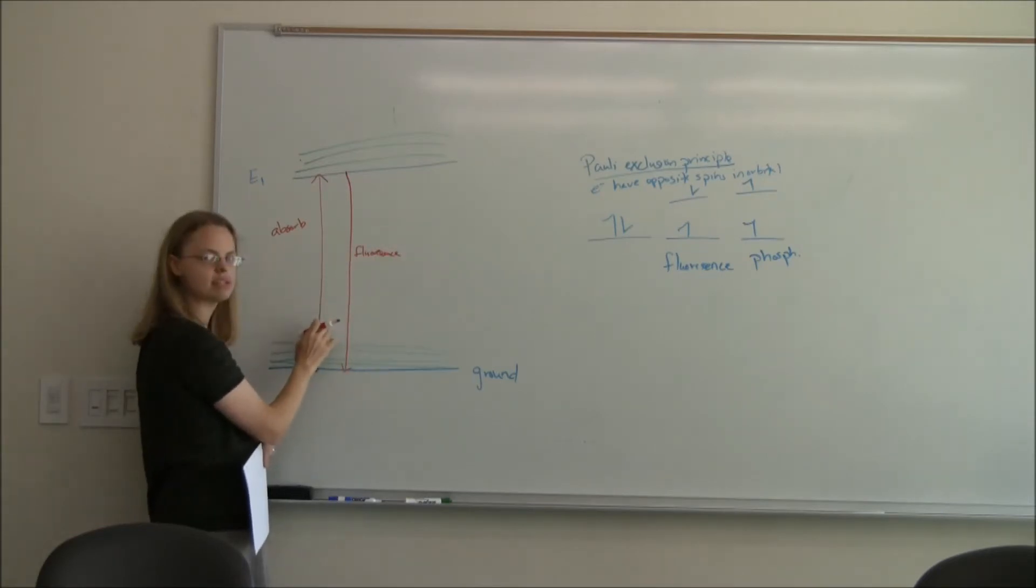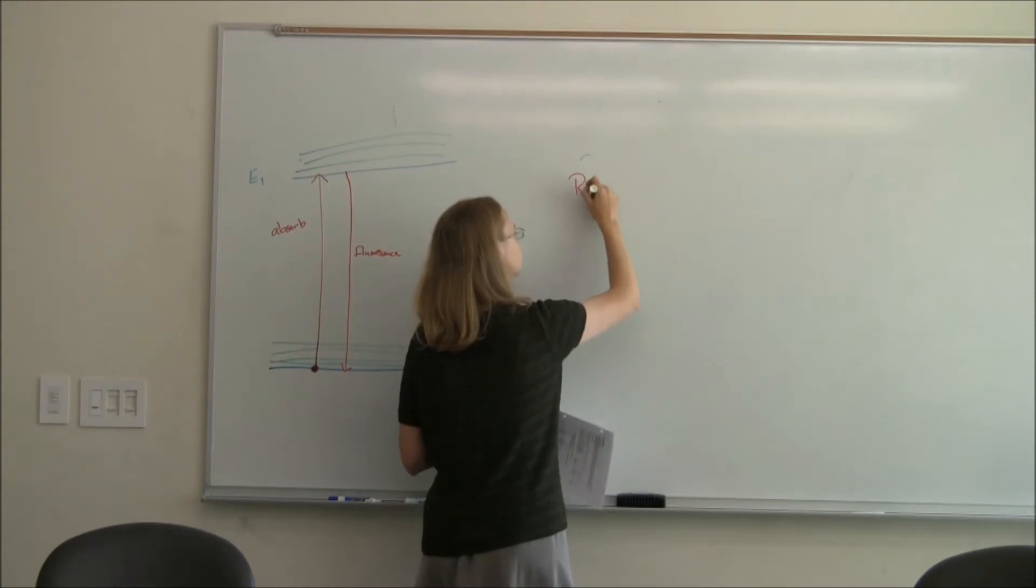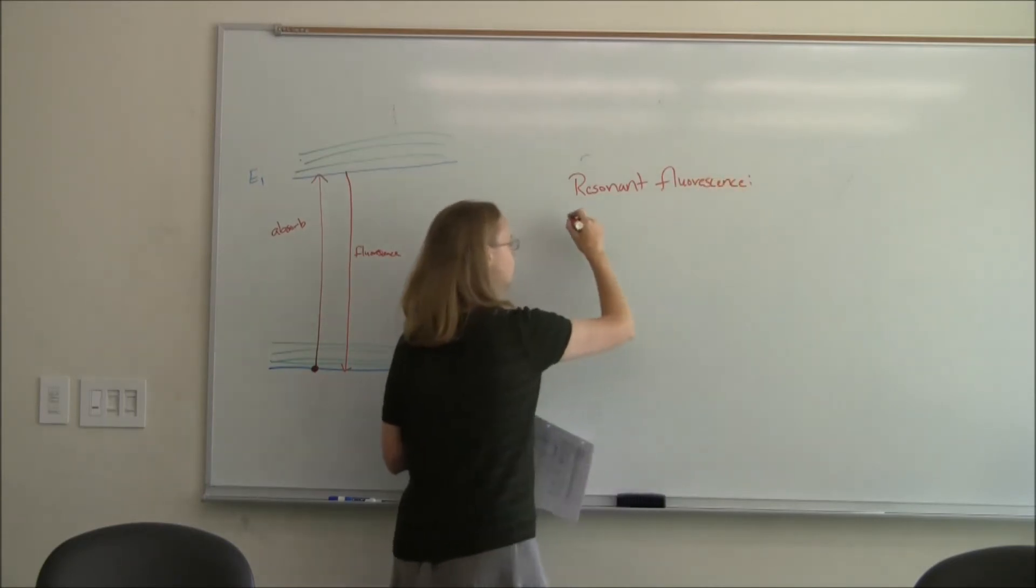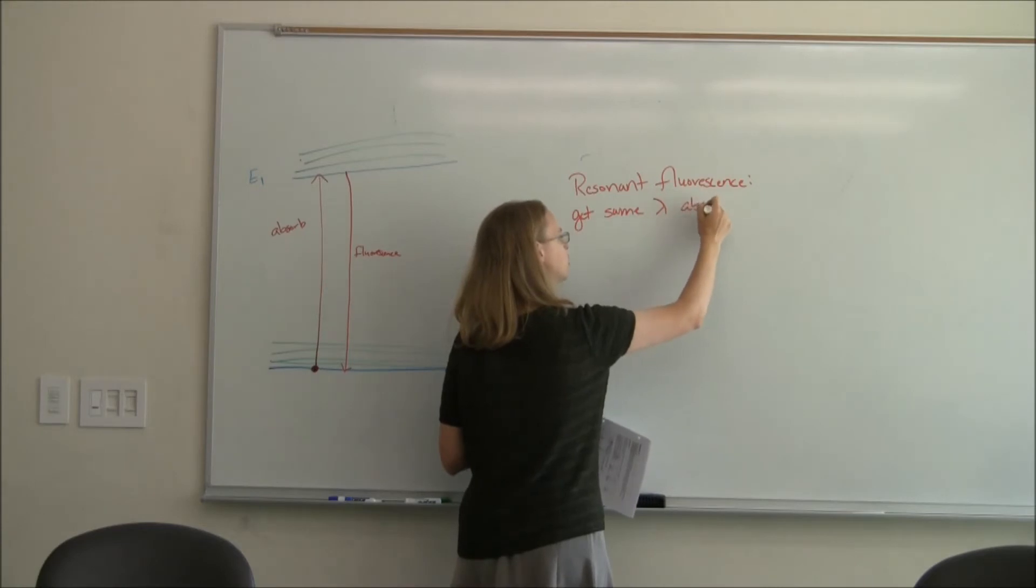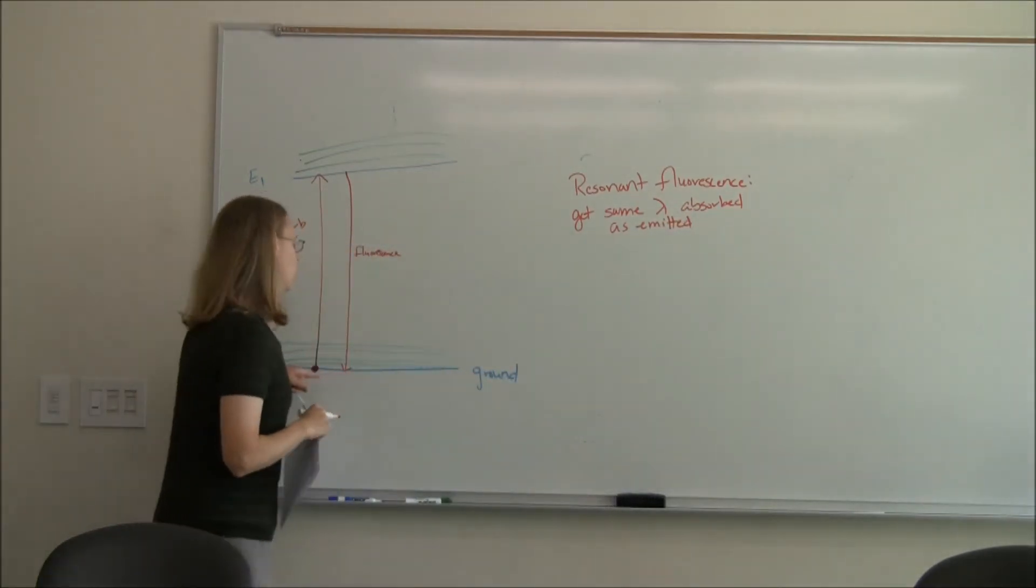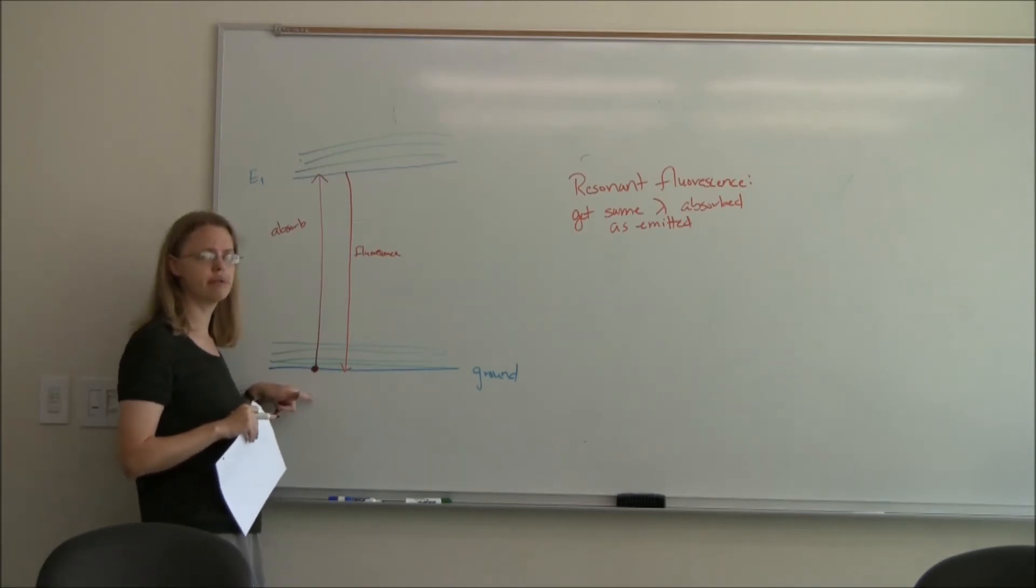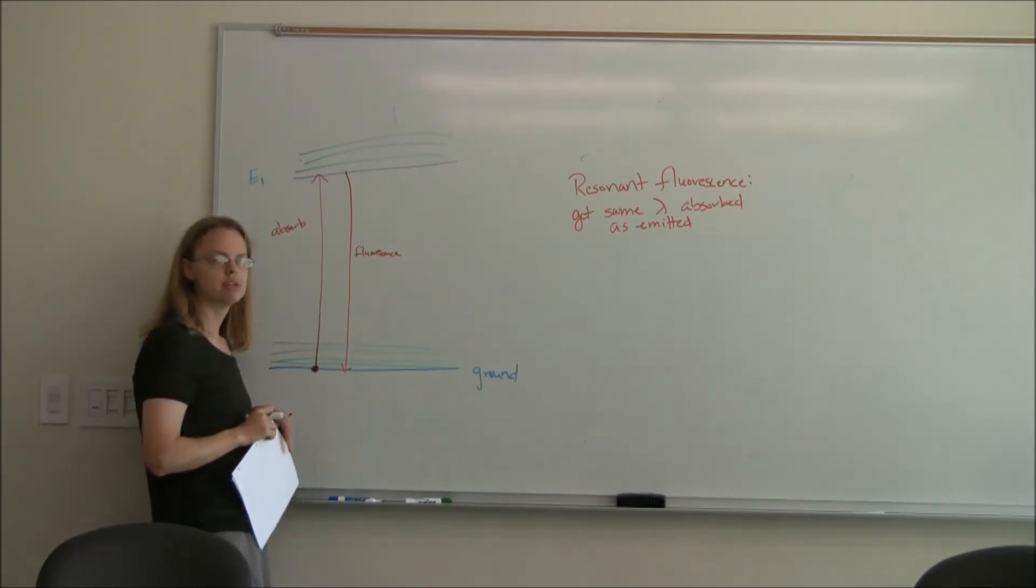But it turns out that if we just did this, it's not very useful. So if we do that, that's called resonant fluorescence. And here's the problem with resonant fluorescence: You get the same wavelength absorbed as emitted. And so it becomes a photon counting problem. I'm shooting a ton of photons at this thing to get it to absorb, and then it emits a photon of the same wavelength. How do I know which photon is which? I can't count them. This is just not useful.